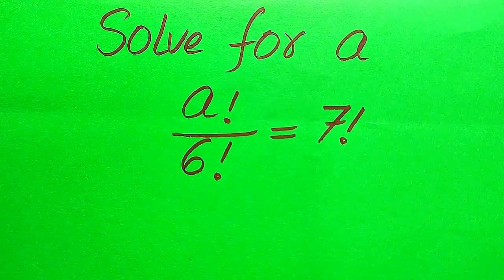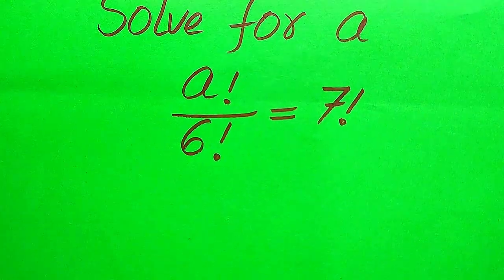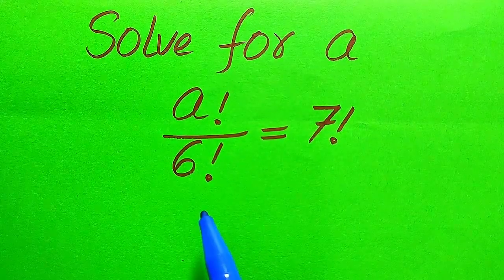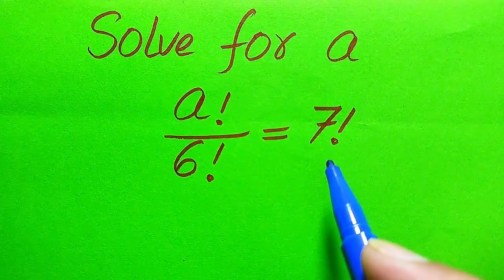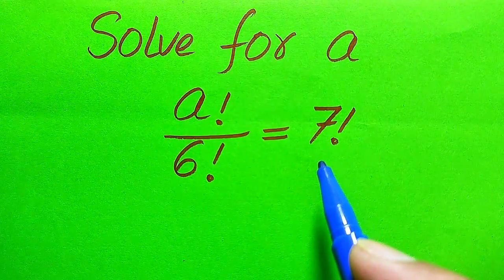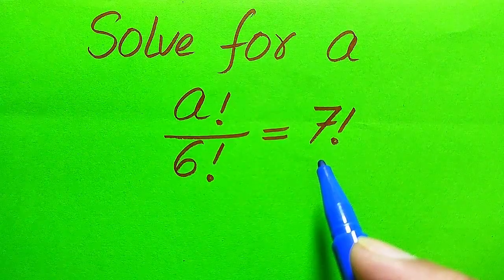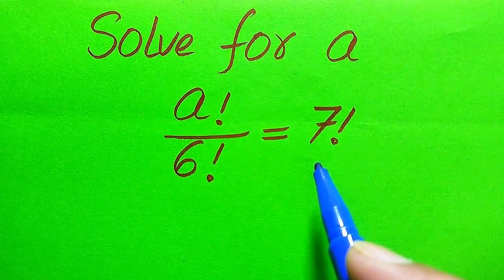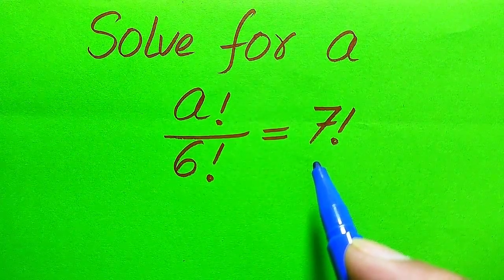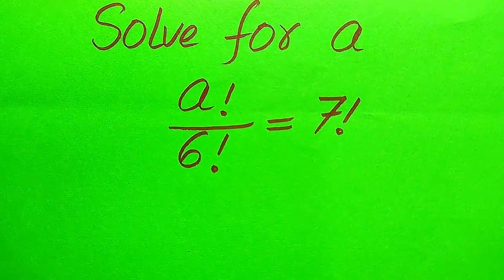Hello everyone. How to solve this problem: for the values of a, if we have a factorial divided by 6 factorial equals 7 factorial. We solve this problem for all the values of a, finding all the roots of this equation. At the end we will verify which of the roots are solutions and which are extraneous roots.